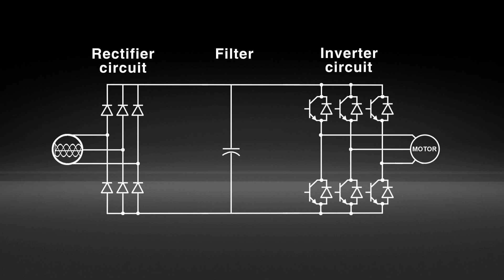It consists of three distinct sections: a rectifier circuit to convert the incoming AC voltage to a DC voltage, a DC link to filter and maintain the DC voltage, and an inverter circuit to generate an output AC voltage with a customizable amplitude and frequency.